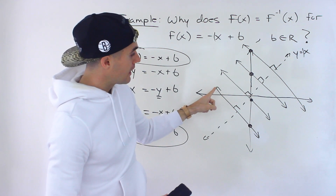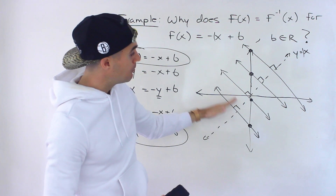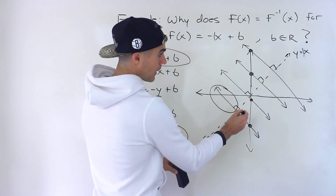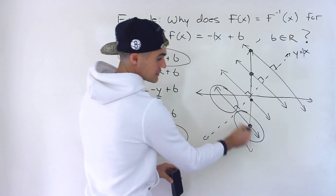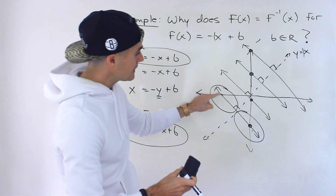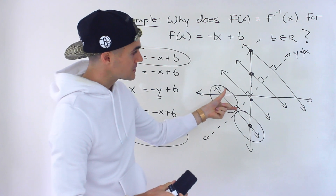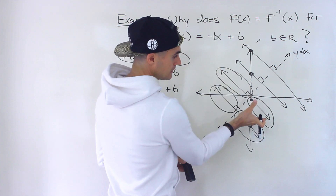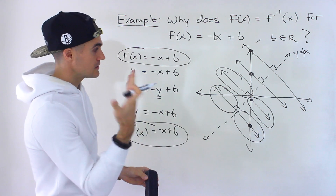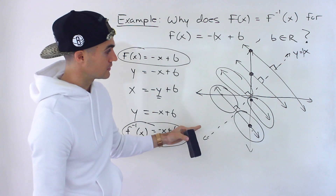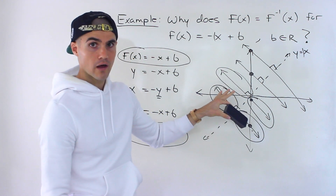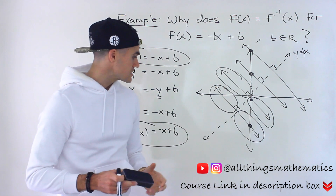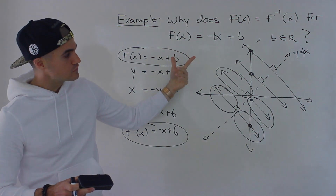Notice what happens with all these lines: when we take the portion above y equals x and reflect it, or take the portion below y equals x and reflect it — if we take this portion and reflect it over y equals x, we're going to end up with this portion, and vice versa. So taking any of these lines and reflecting them over y equals x, we're going to end up with the same line. All of them, when we reflect, it's going to be the exact same line. That's the intuition of how this works graphically — because to get the inverse, you always reflect over y equals x, but reflecting any of these lines over y equals x gives you back the same line.